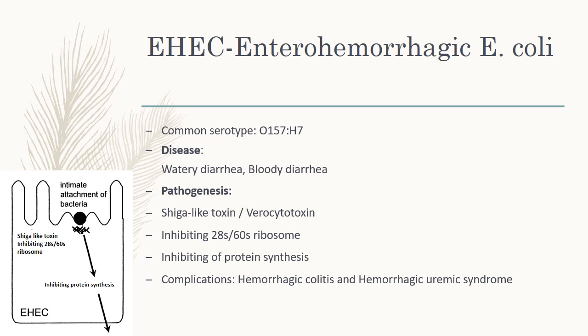In EHEC pathogenesis, the bacteria first attach to the intestinal mucosa, then form a Shiga-like toxin (also called verocytotoxin). This toxin inhibits the 28S subunit of the 60S ribosome, inhibiting protein synthesis and causing diarrhea. Complications include hemorrhagic colitis — with gross bloody diarrhea, abdominal pain, and fecal leukocytosis — and hemolytic uremic syndrome (HUS), which involves injury to small vessels of the kidney, leading to bloody diarrhea, thrombocytopenia, renal failure, and encephalopathy.